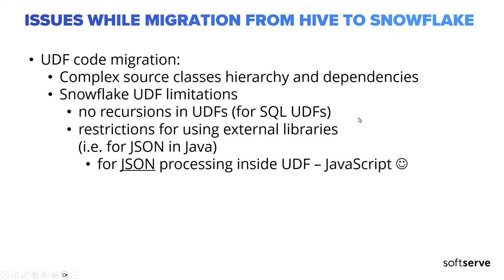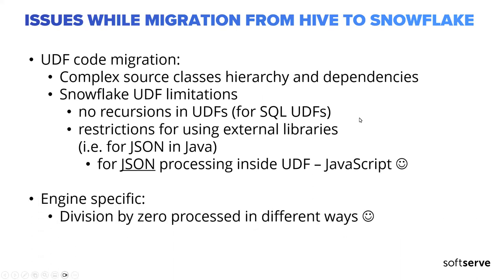There is also a tricky engine-specific difference around division by zero. Hive allows it and returns null, but in Snowflake it returns an error.